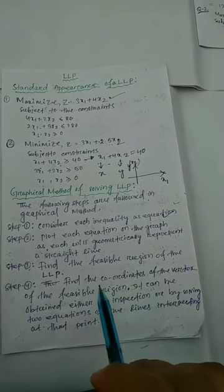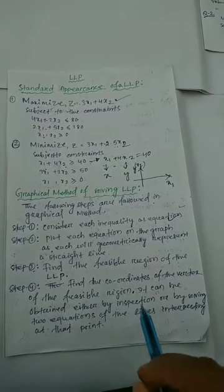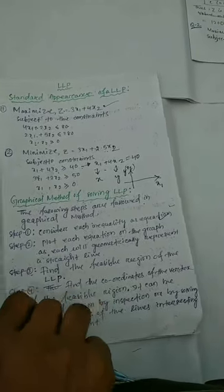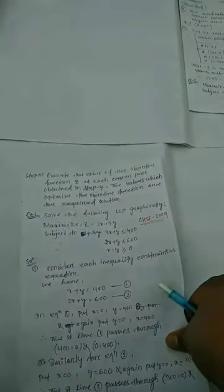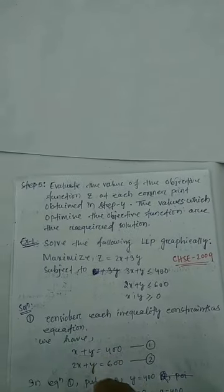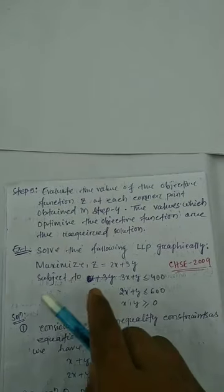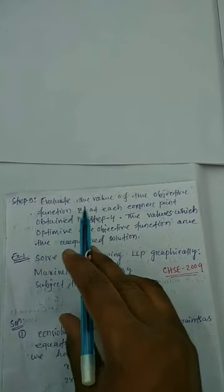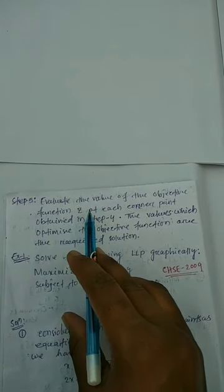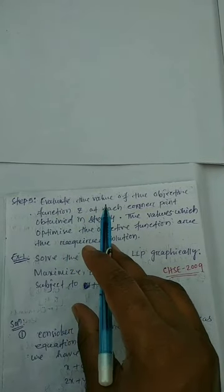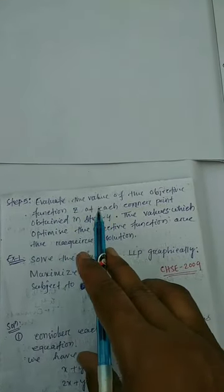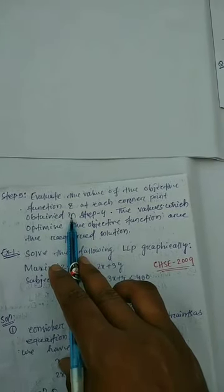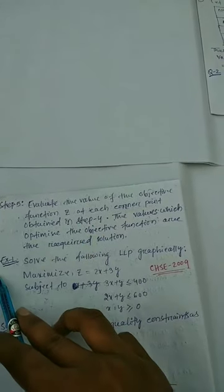Step 5: evaluate the value of the objective function. For example, if z equals 2x1 plus 3x2, we have to evaluate the value of z at each corner point we found. If the problem is a maximization type, we look at the z values and choose the maximum. If minimization, we choose the minimum. The point giving the optimal z value is our solution.